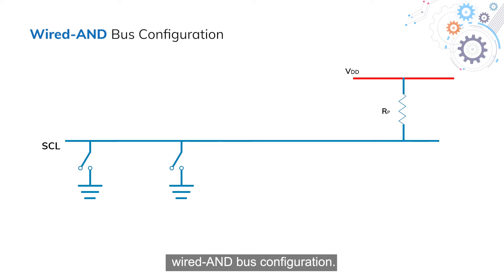Wired-AND bus configuration: The SDA and SCL lines are at logic high by default, and are pulled high by the pull-up resistor, which is connected to the power supply VDD. And there's a good reason for that.